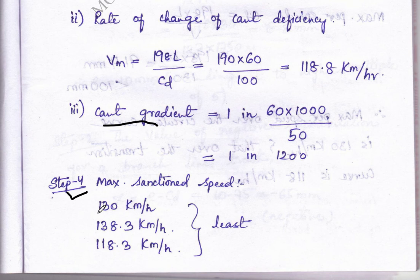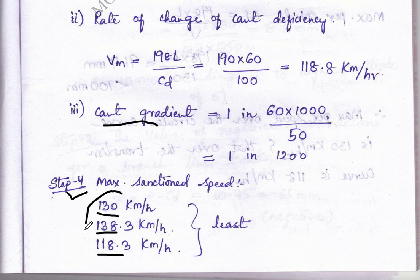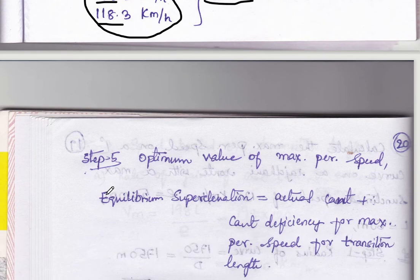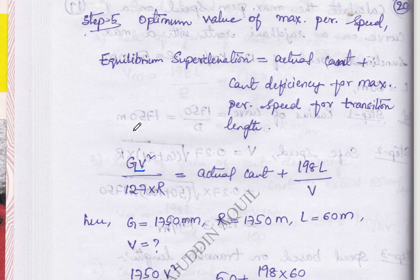Step 4 is to calculate the maximum sanctioned speed. The given value is 130 km/h from the problem, 138.3 km/h as calculated, and 180 km/h also calculated. From these three speeds, whichever is the least, we consider that as the maximum permissible speed.